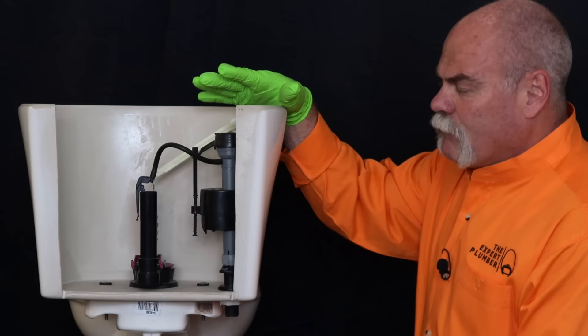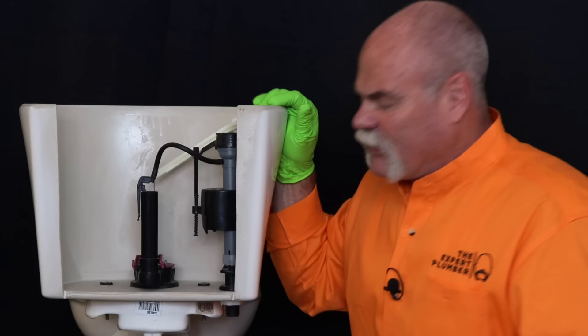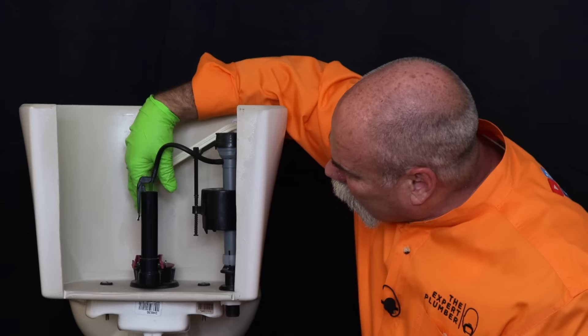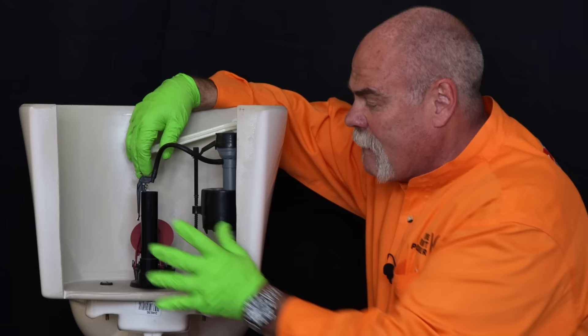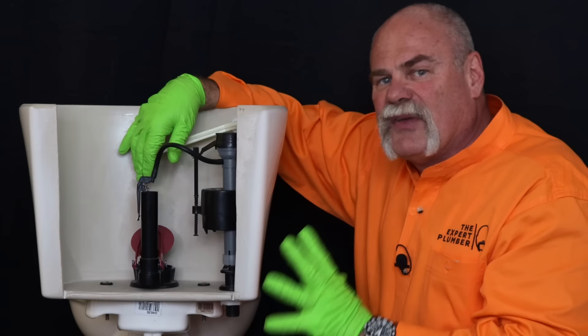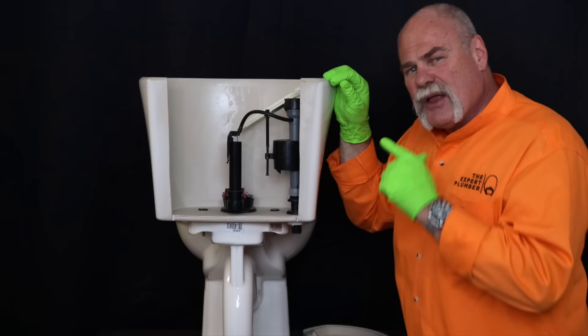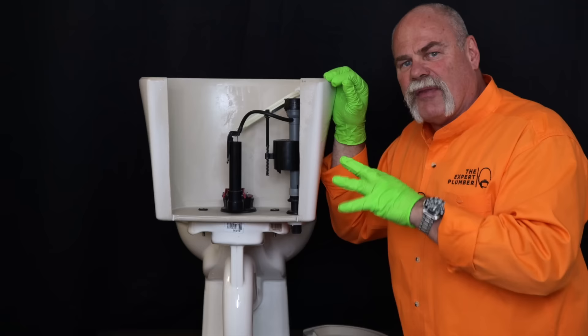Whenever you've got a toilet running, it's a couple of different things. It could either be the flapper is letting water through, and that's going to let water continue to go through the fill valve to fill up. So first thing you're going to do is check the flapper. You want to look at it, and you want to see the rim on it and see if the flush valve has any cracks or nicks or anything like that. If so, you're going to need to change the flush valve. That's a completely separate video.